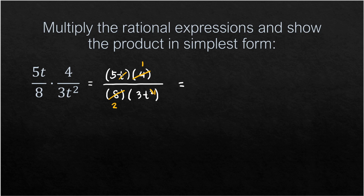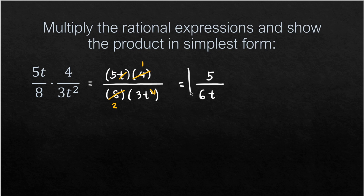Now we multiply what remains: the numerators give us 5 times 1 = 5, and the denominators give us 2 times 3t = 6t. So the product of the two rational expressions is 5/(6t).